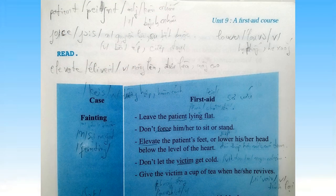Unit 9: A First Aid Course. Case: Fainting. First aid: Leave the patient lying flat. Don't force him or her to sit or stand. Elevate the patient's feet, or lower his or her head below the level of the heart.